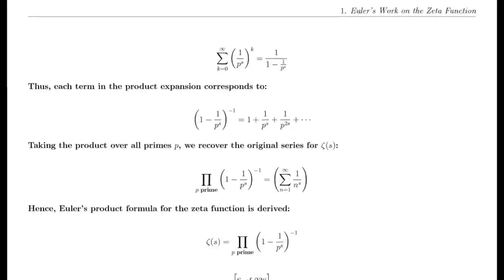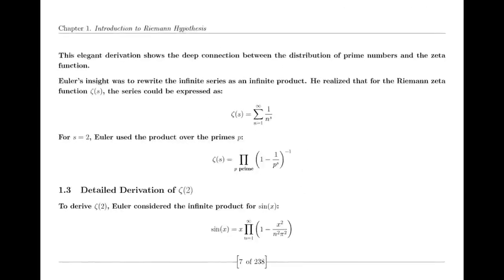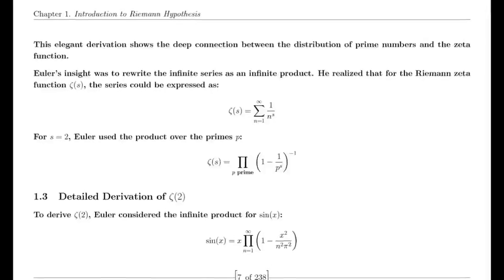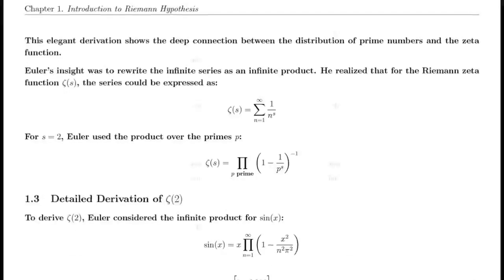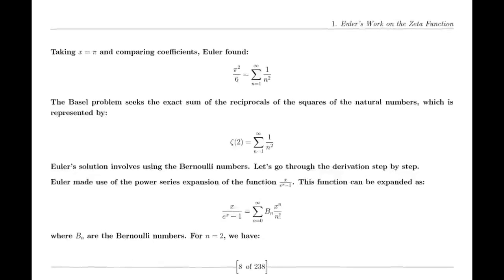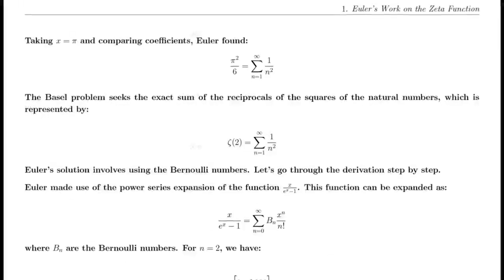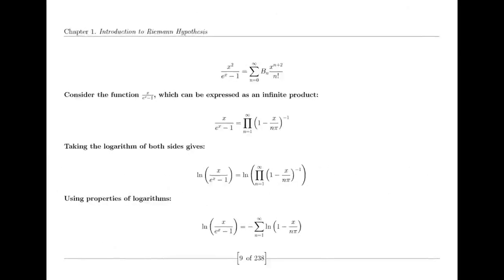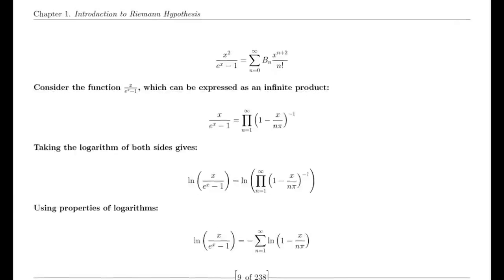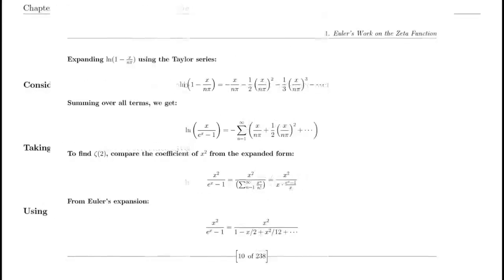Riemann also made use of the Jacobi theta function, which has significant applications in various areas of mathematics. The theta function's series representation and modular properties were instrumental in Riemann's derivation of the functional equation for the zeta function. This equation is crucial for understanding the zeta function's behavior across the complex plane and highlights its intricate connections to other mathematical functions.